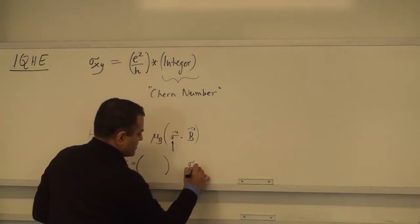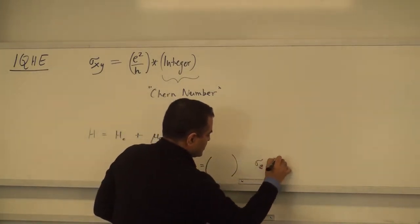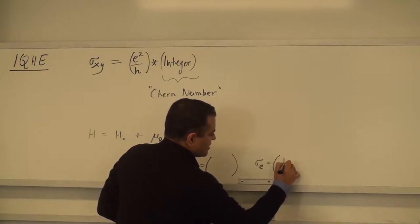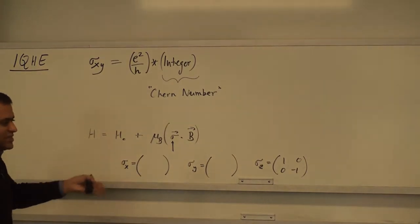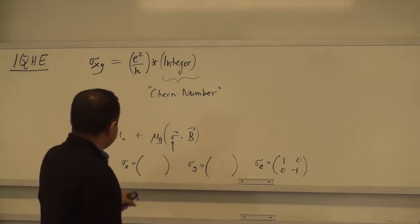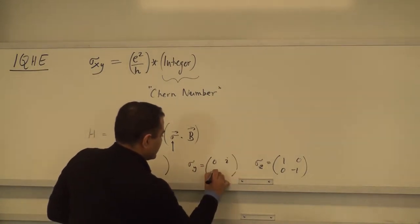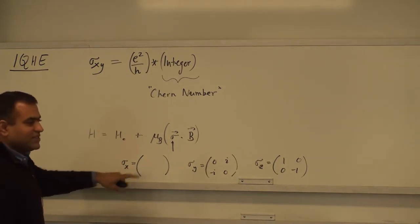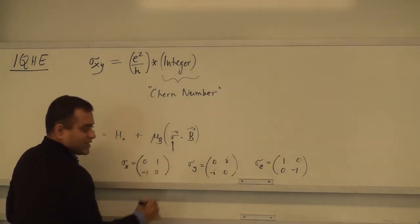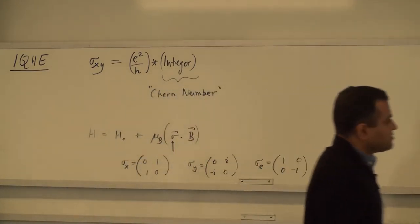The Pauli matrices are: σx = [[0,1],[1,0]], σy = [[0,−i],[i,0]], σz = [[1,0],[0,−1]]. Because the atom beam split into two, the wave function itself must be a two-component quantity — a spinor — not a scalar. So the wave function is written as a two-component vector, and these are the spin matrices acting on it.